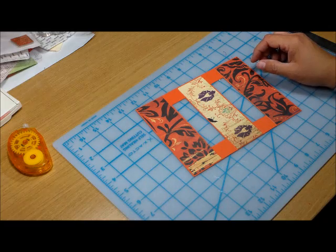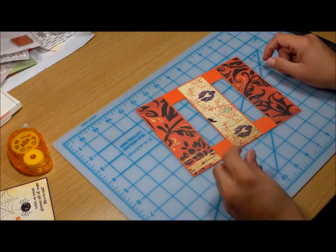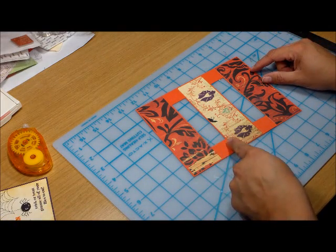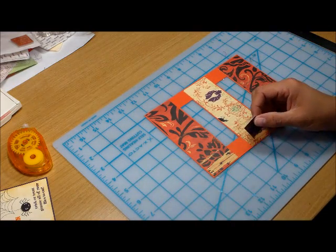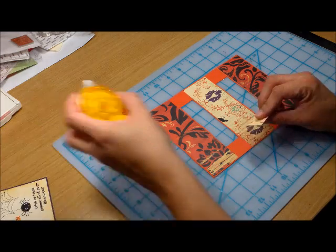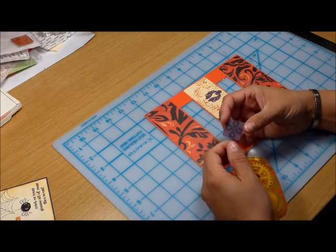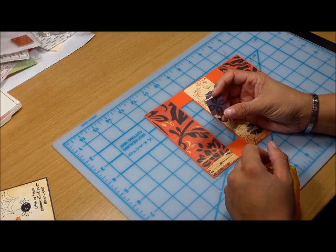And then I cut these little pieces of designer paper for these four little corners in here. You could leave them plain if you wanted to, but I wanted to make a coordinating design here. And these are little squares that are 7/8 by 7/8 inch.